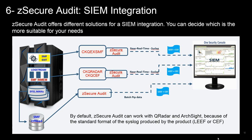The last important functionality included in zSecure Audit is the integration with an external SIEM solution. By default it can work with QRadar and ArcSight because of the standard format of the syslog produced by the product — either LEEF or CEF format — but you can also use it with other SIEMs that are able to understand these formats, most commonly the CEF format. With zSecure Audit you can collect not only security events but also system events that are SMF records stored on SMF offloaded data sets, SYSMAN data sets, or directly on log streams. You can then send them to the SIEM, which transforms SMF events into a text format that the SIEM application can process and enriches with additional information to help interpret the data.